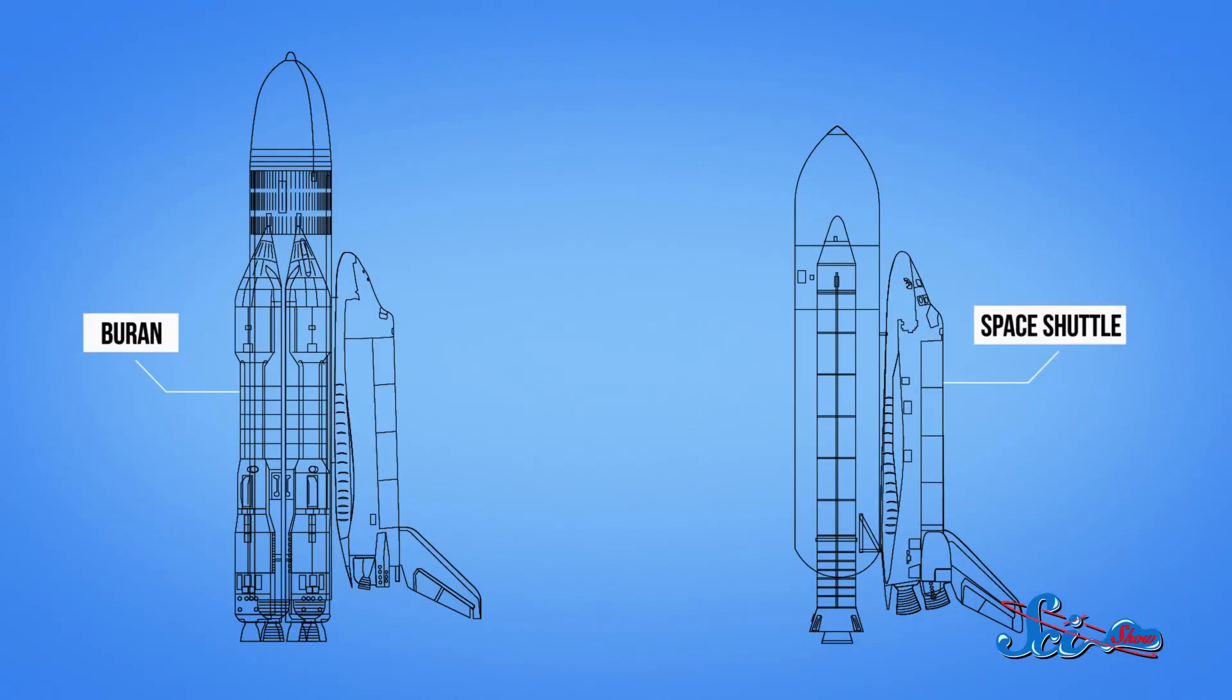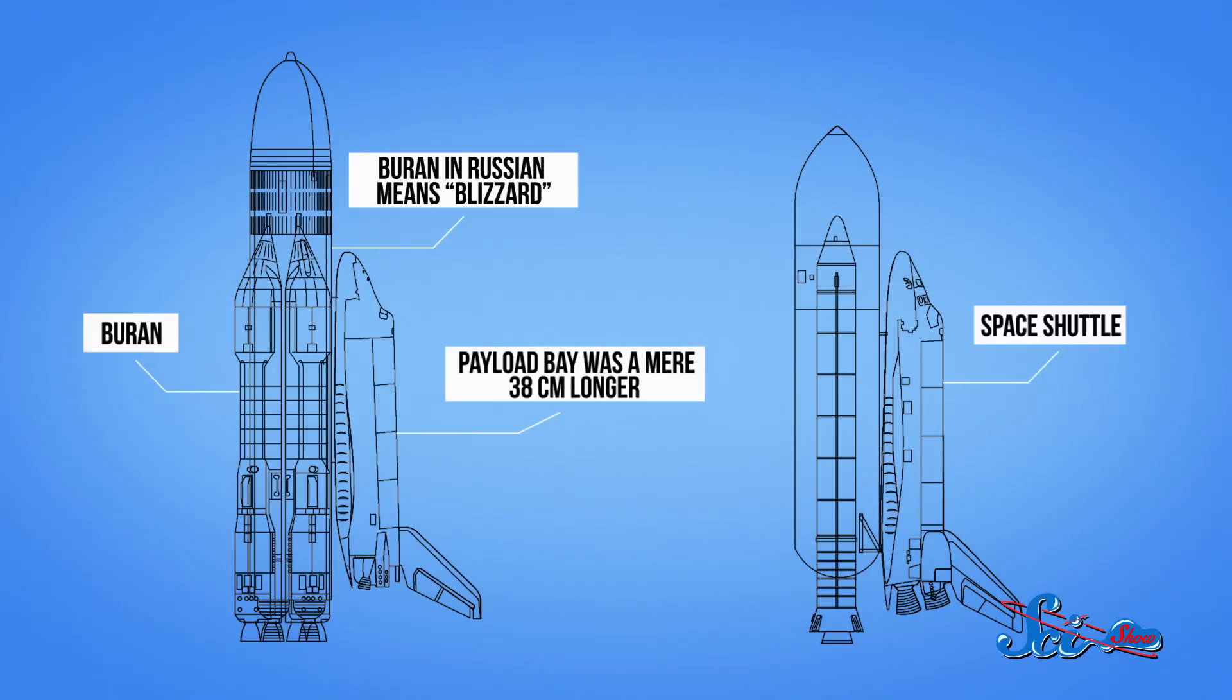And the two orbiters were similar. The Buran, Russian for Blizzard, was just a meter longer than the Space Shuttle, its payload bay was a mere 38 centimeters longer, and its vertical stabilizer was all of two centimeters taller.